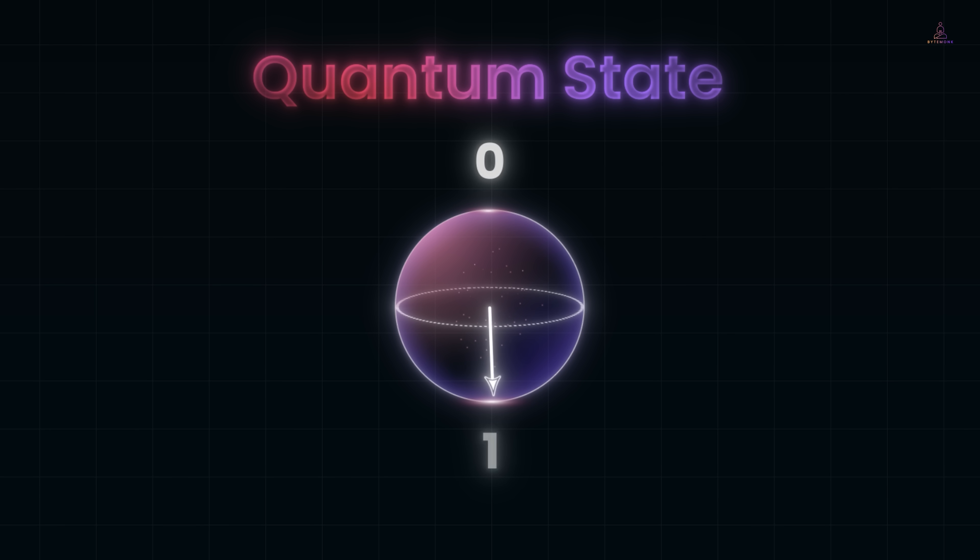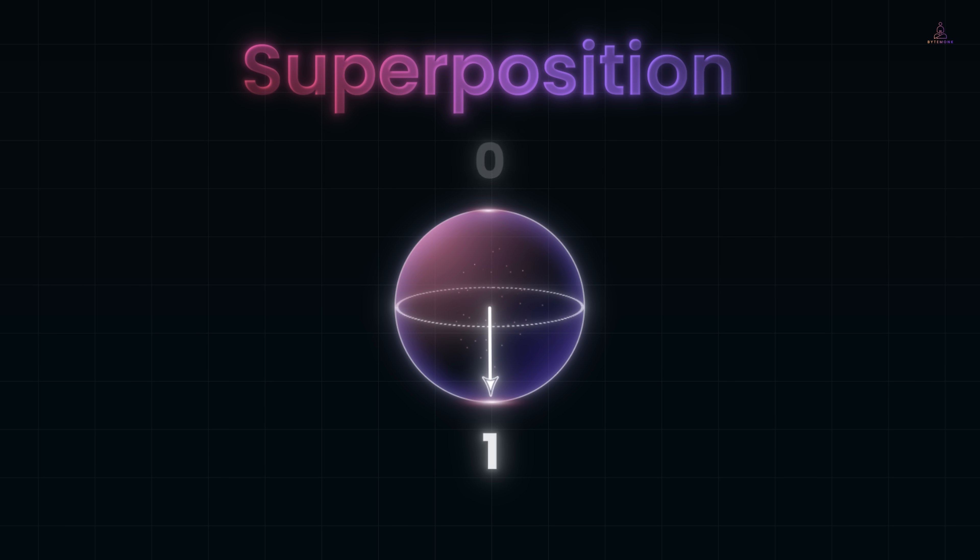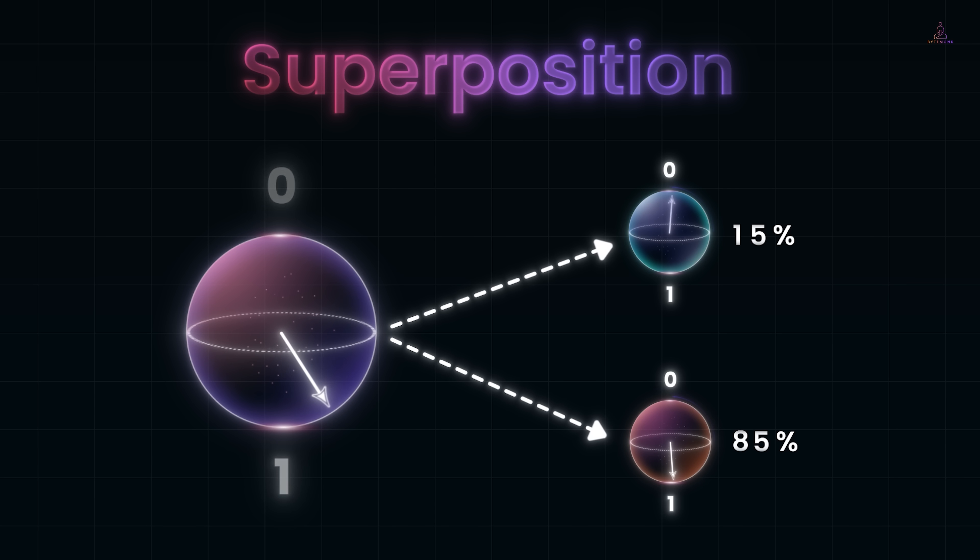When you actually catch the coin, that's like measuring the qubit. In that instant, the spinning stops and the qubit chooses one definite outcome, either 0 or 1. You never see it as both, you only see one when you look. Think of superposition like having a coin spinning in the air. Instead of picking just heads or tails, the qubit is holding both options together with certain probabilities.